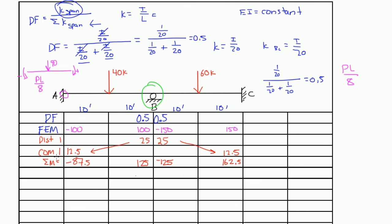In this case, we only did one distribution cycle — that's all we needed. It was actually pretty easy. Normally, you would continue doing distributions and carryover moments until your carryover moment becomes less than one. In our case, joint B was already in equilibrium, which means the rest of the structure should be in equilibrium too. In the next video, we're going to finish up this example and find the reactions at A, B, and C.